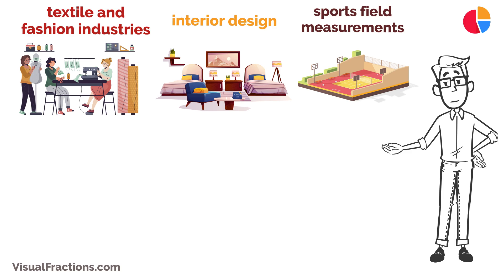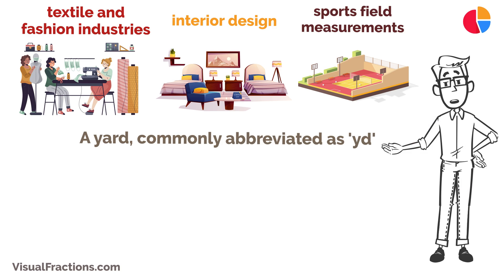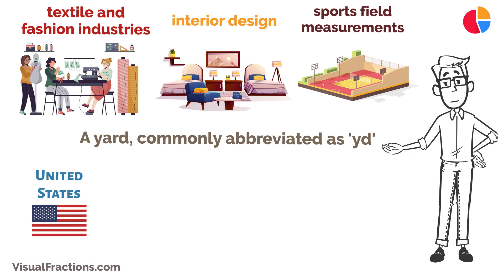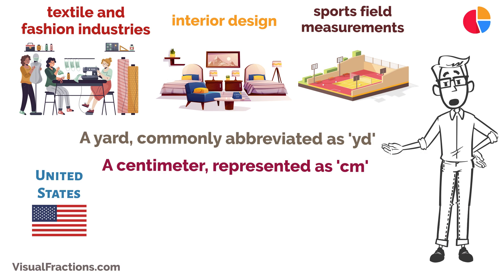Let's start with the basics. A yard, commonly abbreviated as YD, is a unit of length in the Imperial and United States customary systems. A centimeter, represented as CM, is a unit of length in the metric system. The relationship between these units is essential for accurate measurement conversions.